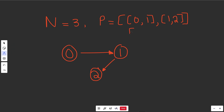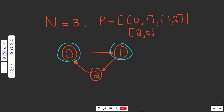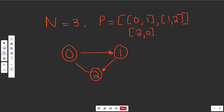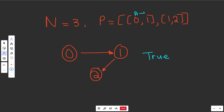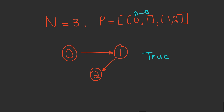Now let's make a slight modification: add the connection 2→0, meaning to take course 2 you'd first have to take course 0. That creates a problem — to take 0 you need 1, to take 1 you need 2, and to take 2 you need 0. There's a cycle in this graph. When there is a cycle, you return false. If there's no cycle, you return true. This problem simply boils down to detecting cycles in the graph.